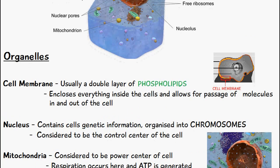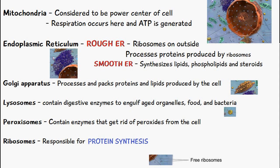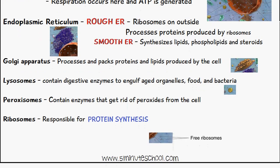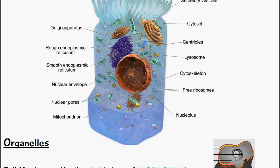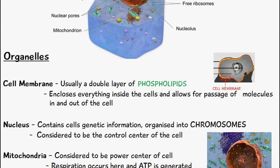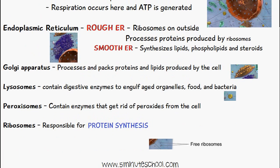We also have peroxisomes. There's no image in the diagram above, but the function of a peroxisome is that the enzymes inside it get rid of peroxides from the cell — it's very important to eliminate peroxides. Finally, ribosomes: some are present on the endoplasmic reticulum, there are also free ribosomes, and they're also present inside the nucleus. The function of ribosomes is protein synthesis — to produce proteins.